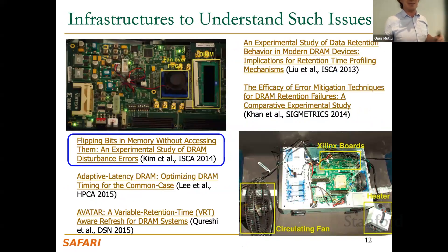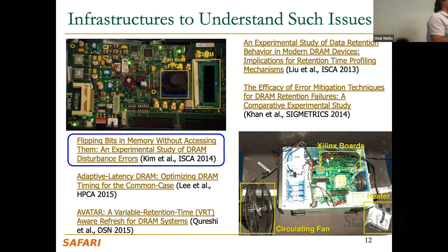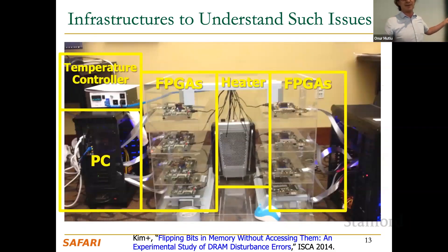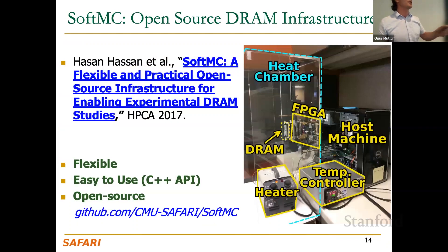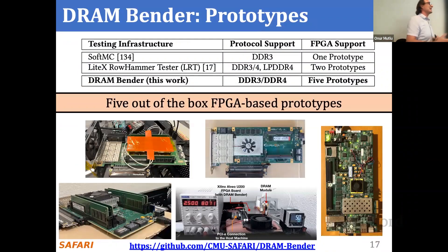We wanted to build an FPGA-based infrastructure to understand low-level DRAM issues — retention failures, latency, and RowHammer. These are FPGA-based platforms where you can modify the memory controller and change the commands issued to DRAM, so we can test essentially anything the interface allows — for example, by violating timing parameters or not refreshing DRAM. We open-sourced it in 2017 and released a newer version in 2022 that can test DDR4 chips.